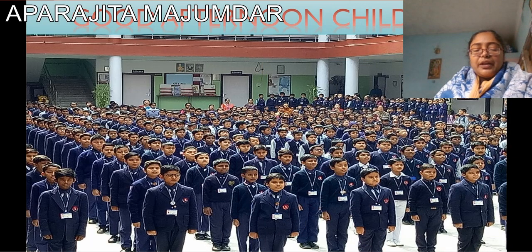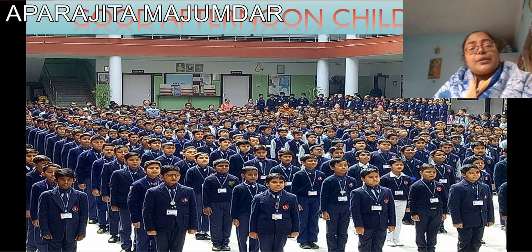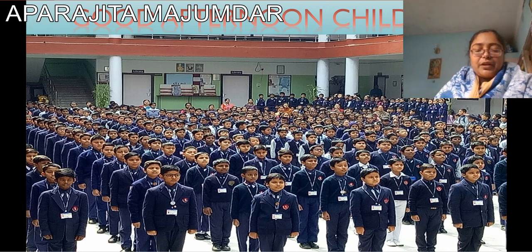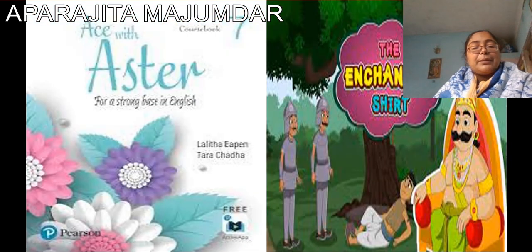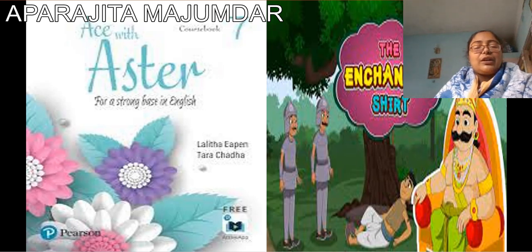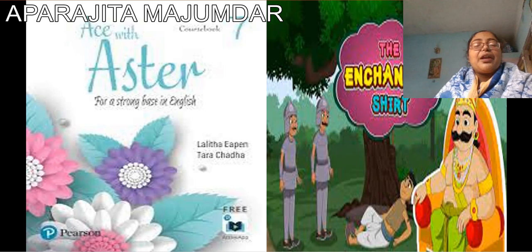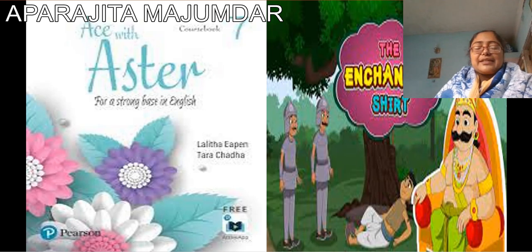Good afternoon children. A very good afternoon to all of you. Today we are going to start an explanation of the chapter which we had started yesterday. Welcome — the name of the chapter is The Enchanted Shirt. We had started the explanation yesterday. It's a wonderful poem written by John Hay. And now today I am going to explain the second lot of six stanzas.